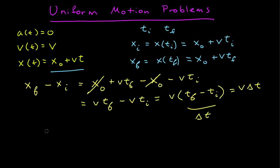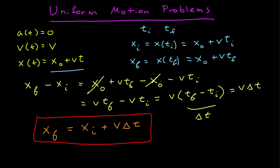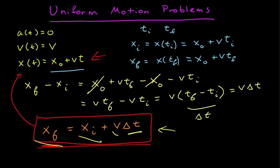This gives us a very useful relationship: our final position equals our initial position plus the constant velocity times the time interval. Note that it looks similar to the position function, but it is very different. The position function is defined over all time, whereas this is just a relationship between specific values — the position at t final, position at t initial, the velocity, and a specific time interval. This is not a function, but a relationship between parameters at two specific points in time.